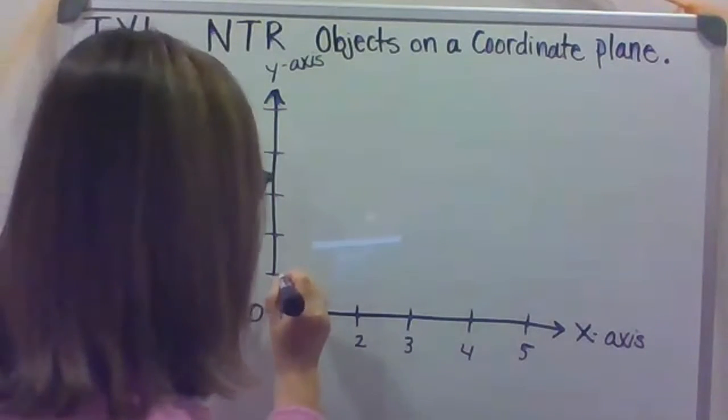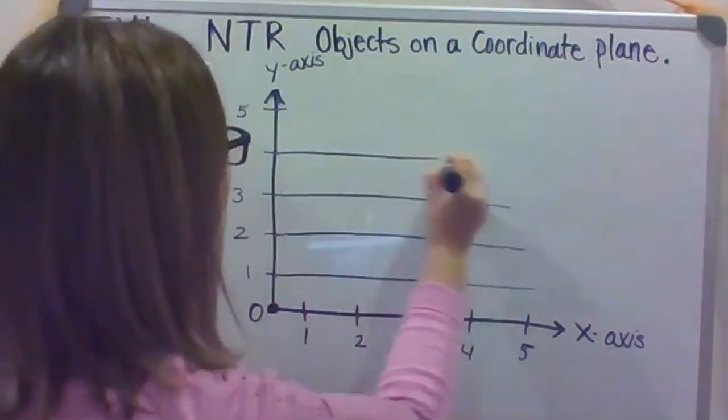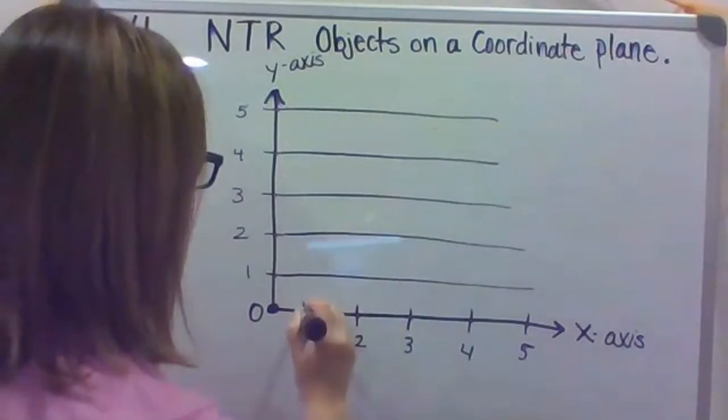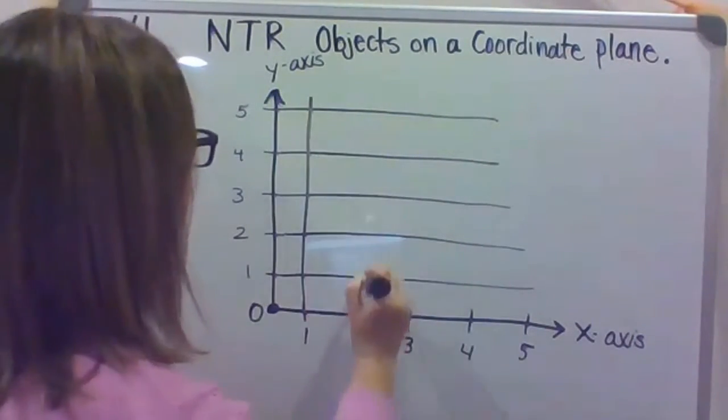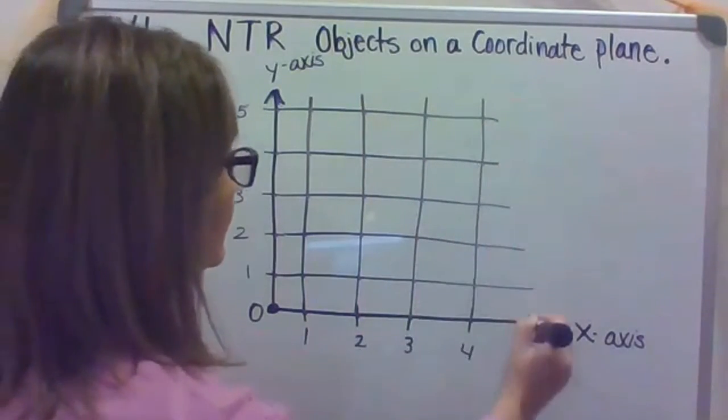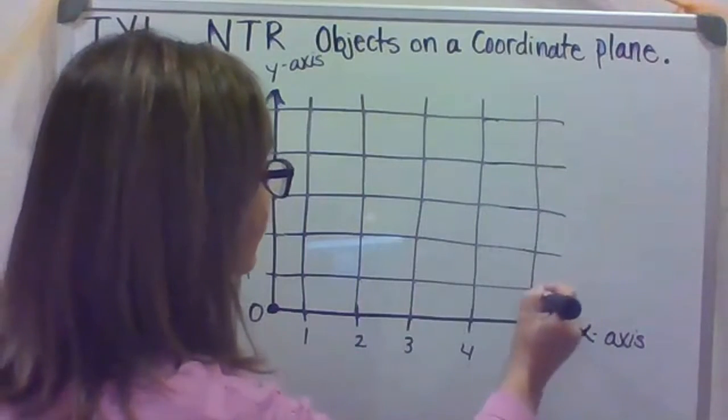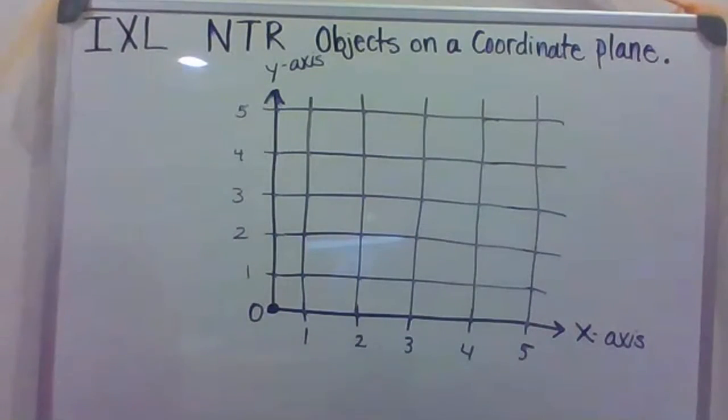And then you would see lines. Mine are not going to be perfectly straight, but just for the purpose of doing a quick teach on this. So this would be our coordinate plane. This is our X-axis. This is our Y-axis.